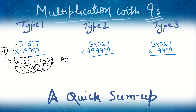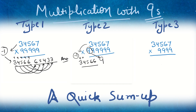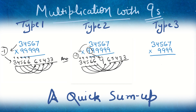Now Type 2, where we have one extra 9, and the first number is still 34567. Same two steps: subtract 1 to get LHS 3,4,5,6. Then take the extra 9 and put it in the middle — one extra 9 goes there, or two extra 9s if applicable. Then subtract each digit from 9: 9−3=6, 9−4=5, 9−5=4, 9−6=3, 9−6=3. That is the answer in Type 2.